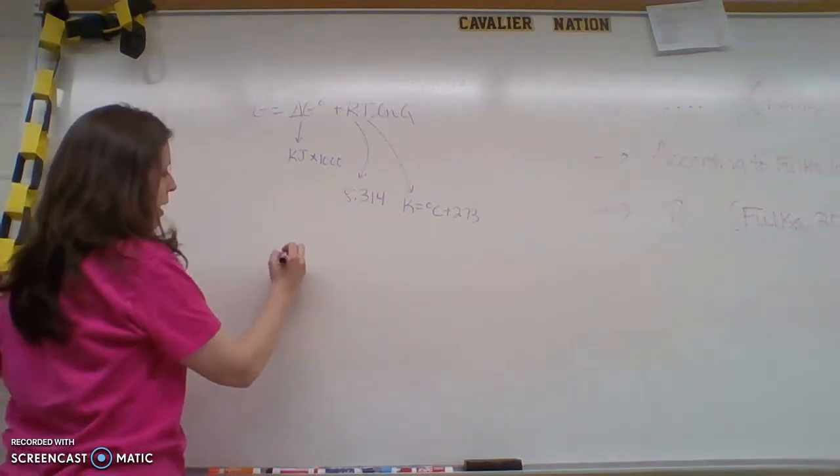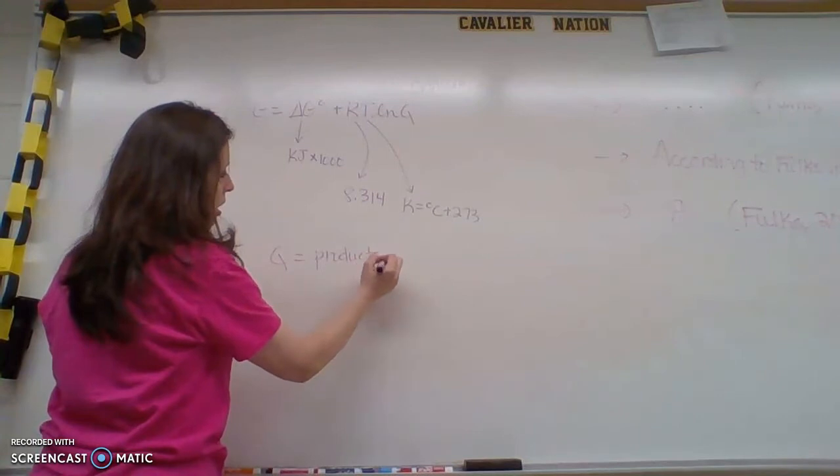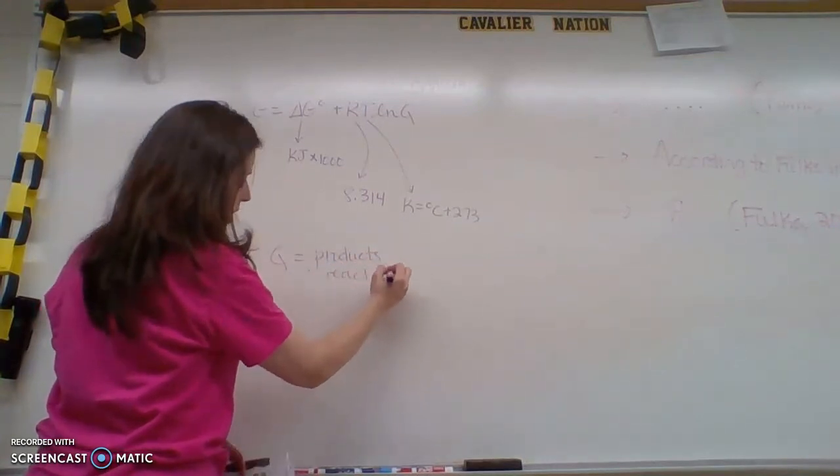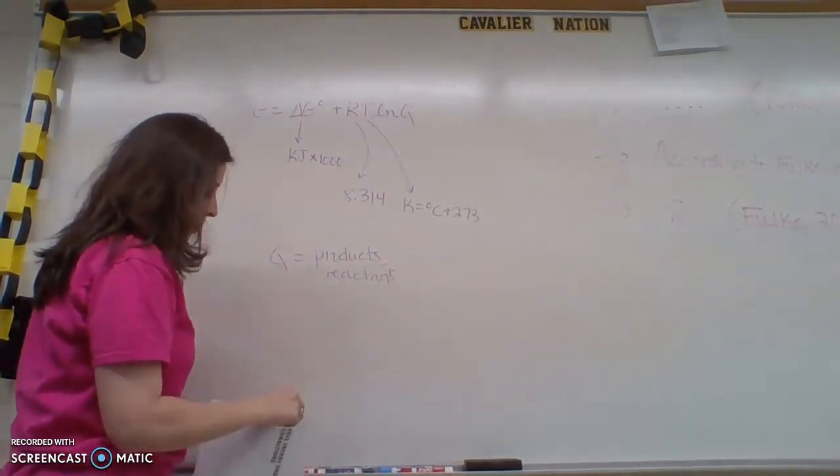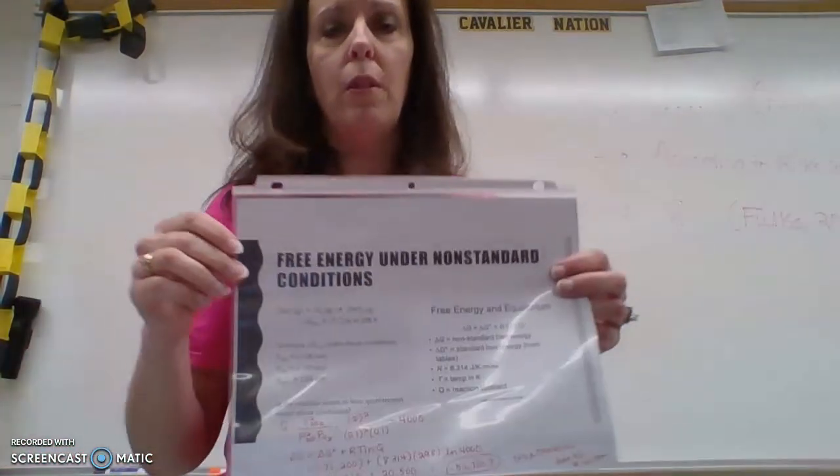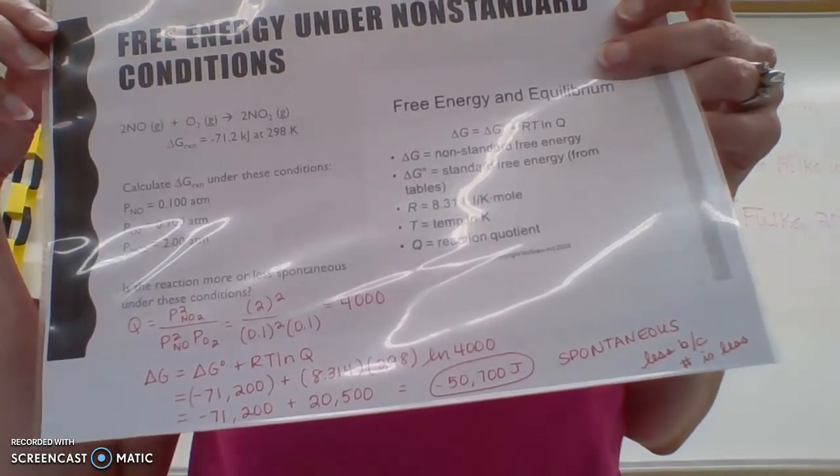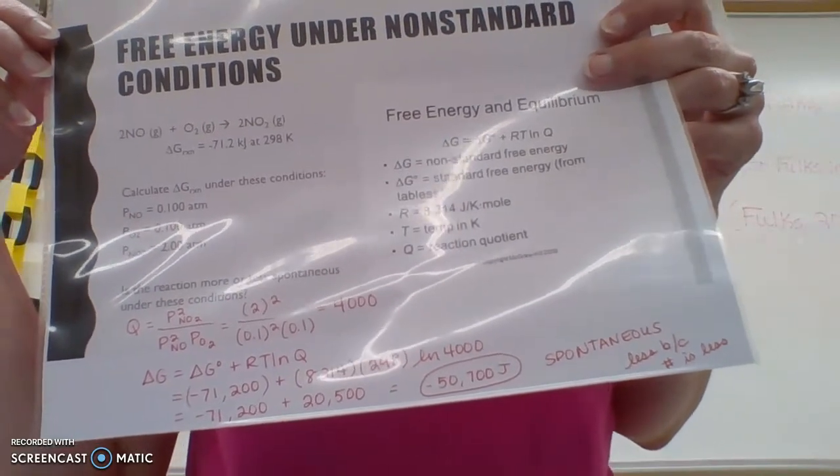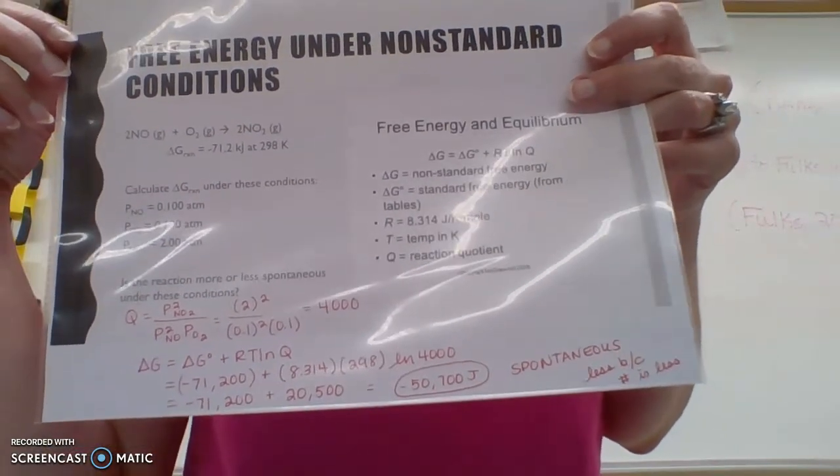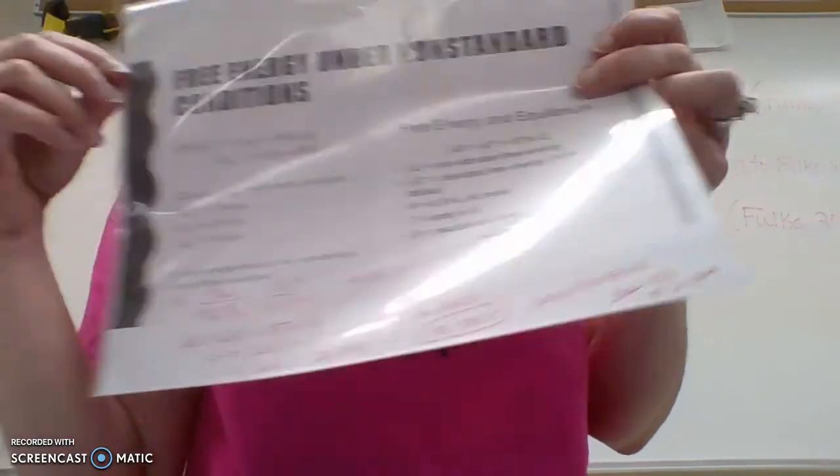Q is going to be that products over reactants. And in this example here, I'm going to just flash this back up really quick because my markers aren't doing the best. And this one, if you look towards the bottom, you can see in red, Q is products over reactants. So I just put those pressures in. I set it up the same way I've done before, and I get my answer, and I just put it right there into the equation.